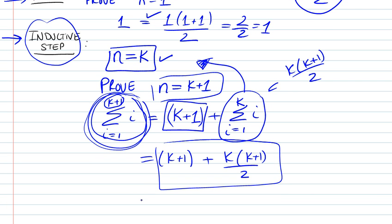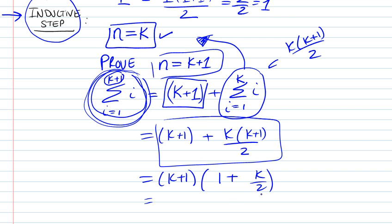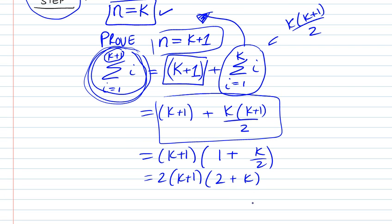And we're almost there. So we're going to factorize k plus 1, and then we have 1 plus k over 2. If you look at this closely, what this tells you, if you take the 2 out, you have 2k. And what is this exactly?